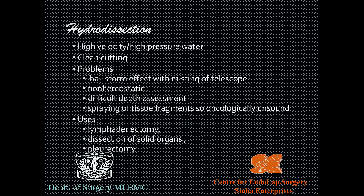Hydrodissection uses high velocity, high pressure water to cut cleanly. Problems include the hailstorm effect — water bouncing back at the surgeon — misting of the telescope, lack of hemostasis, difficult depth assessment, and spraying of tissue fragments making it oncologically unsound. Uses include lymphatic neck dissection and dissection of solid organs and rectum.